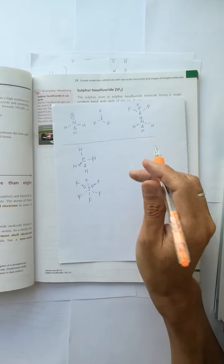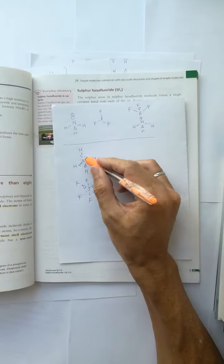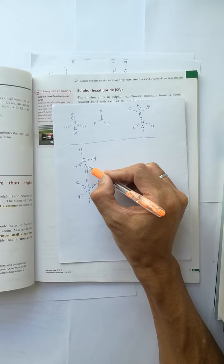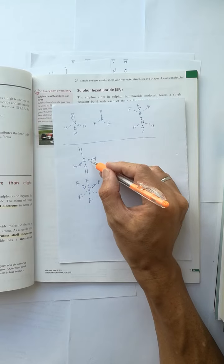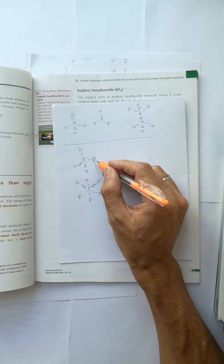Okay, this example, we cannot draw two bonds out of paper and one behind paper.